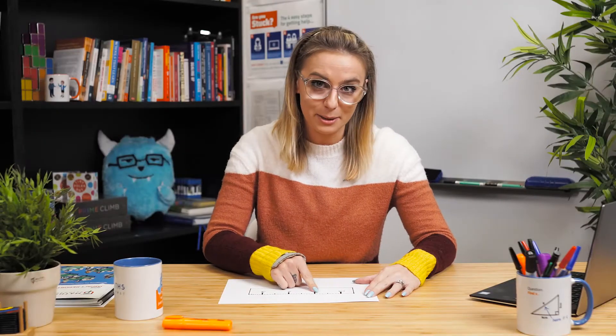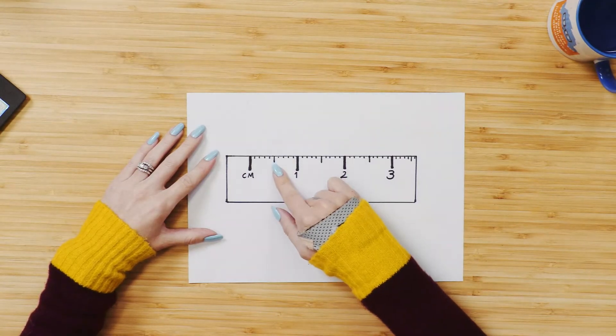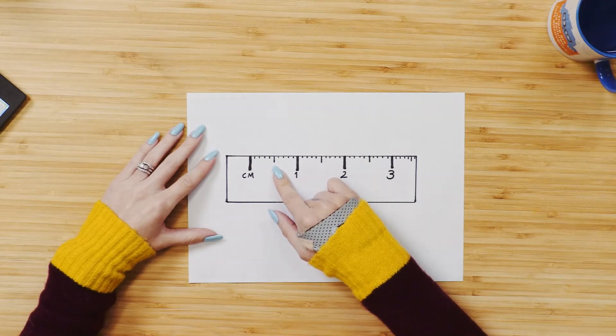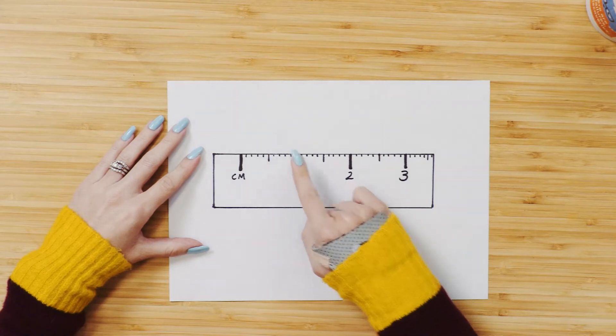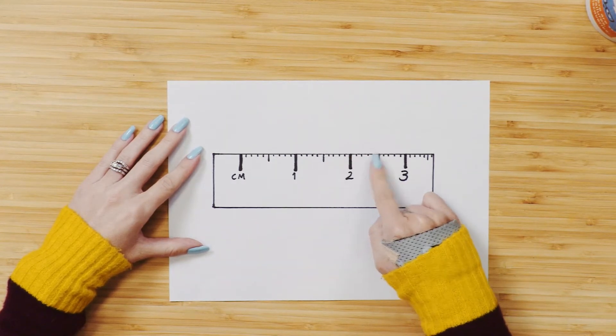These are my millimeters and in the middle I can see that my 5 is just a little bit longer and that is there to help me measure more effectively and those can be counted in fives. So I've got 0, 5, 10, 15, 20, 25, 30.